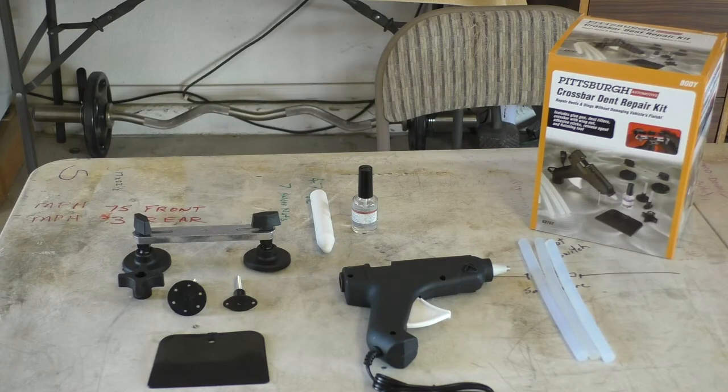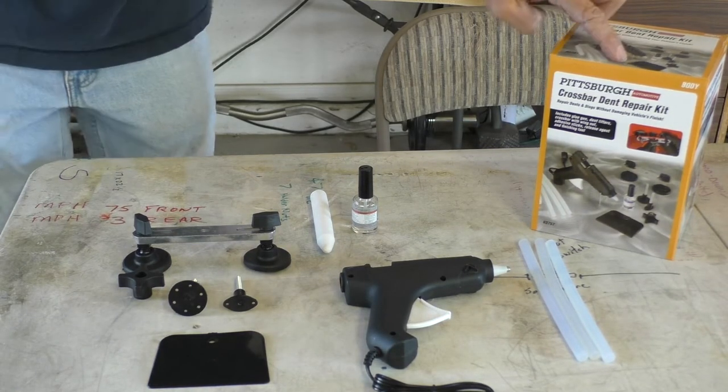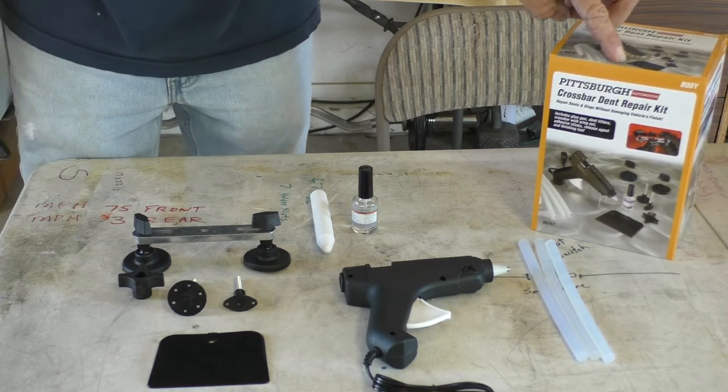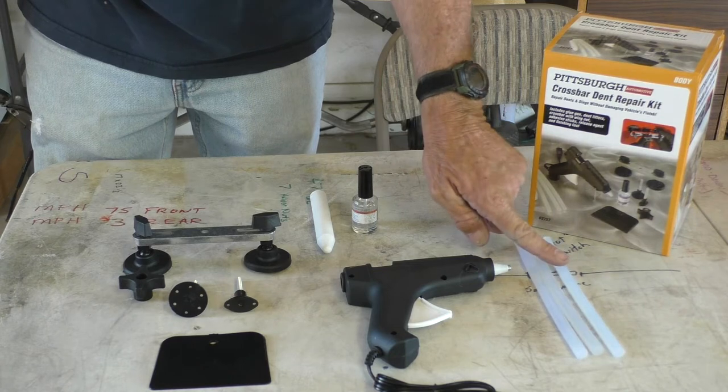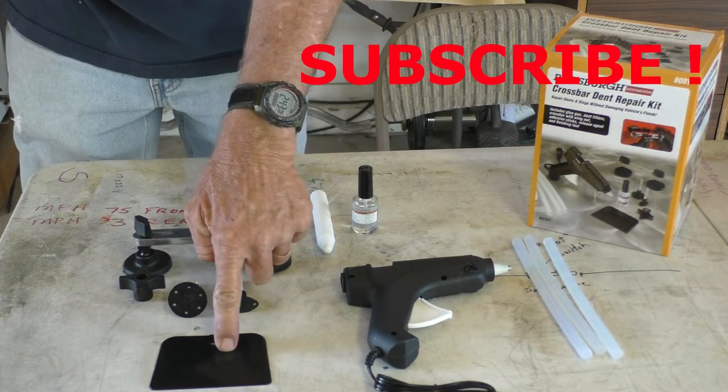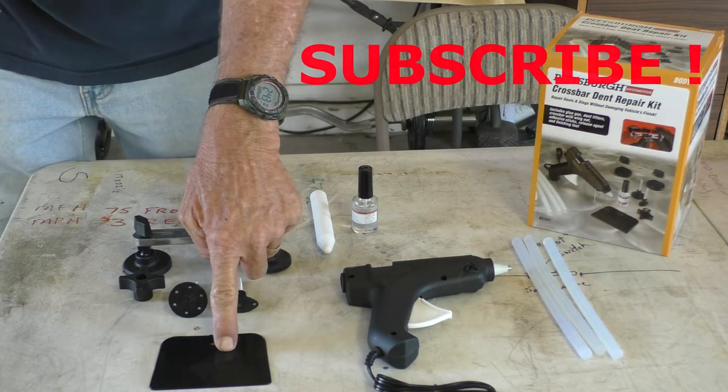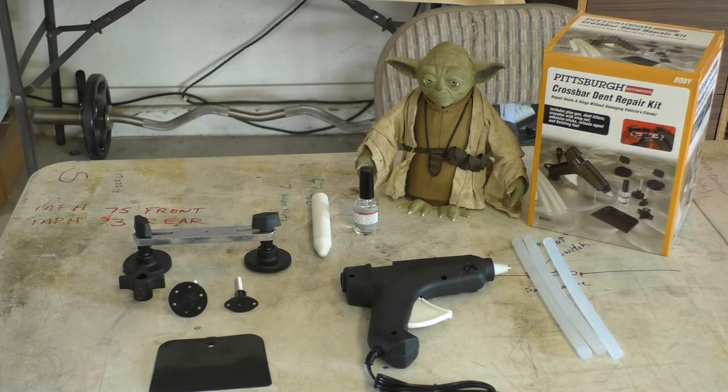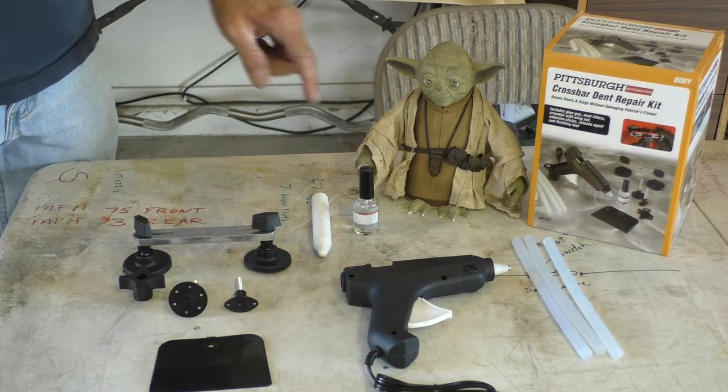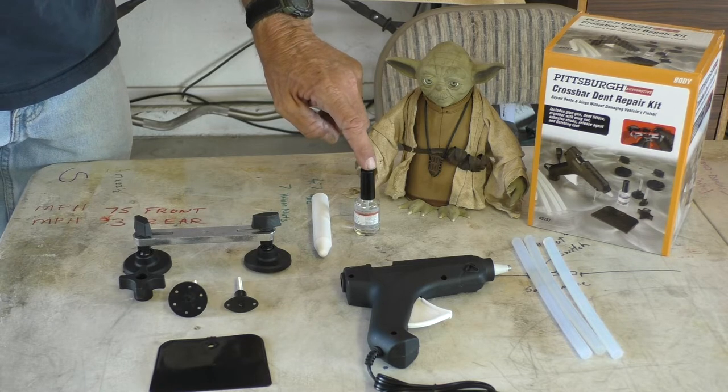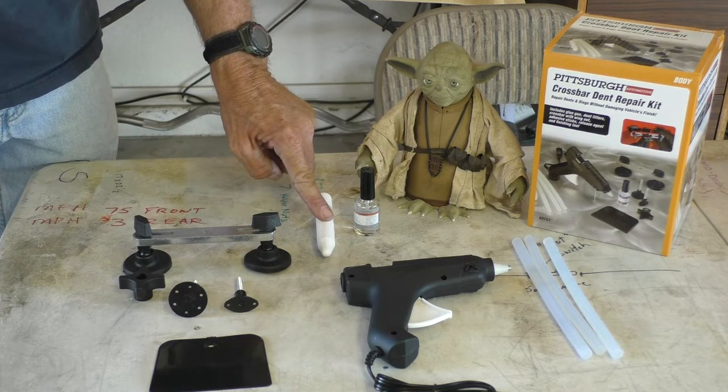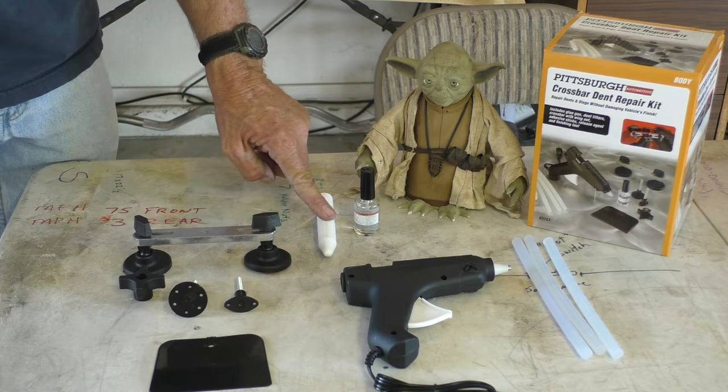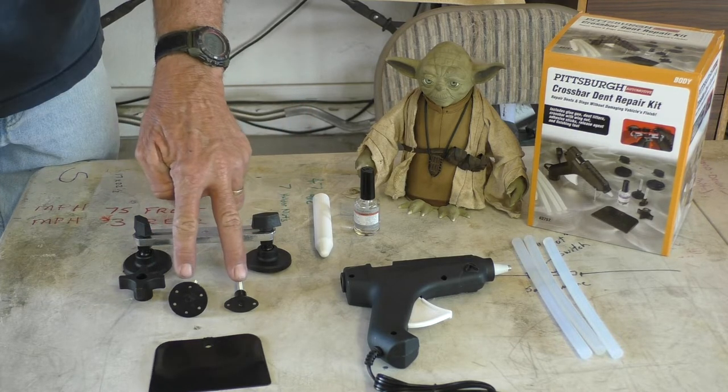Okay, Harbor Freight crossbar dent repair kit, 15 bucks. Comes with the glue gun, three glue sticks, a scraper to remove the glue when you're done, a release agent, a little nylon tool to pound down raised areas if you get it too high, the crossbar, and two little dent pullers for different sized dents.